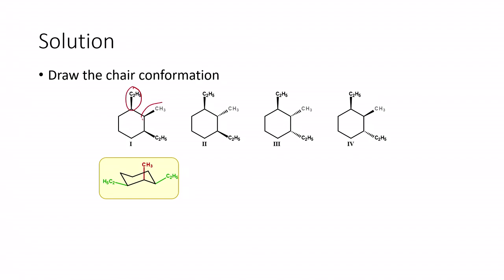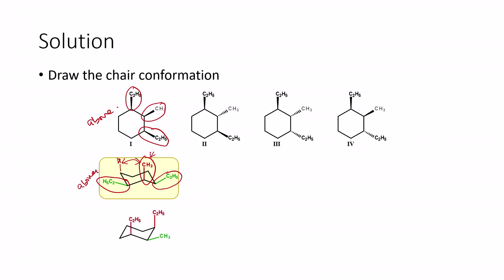Compound one has an ethyl, a methyl, and another ethyl group, all pointing above the plane. The methyl group (shown in red) is in the axial position, causing 1,3-diaxial interactions with neighboring hydrogen atoms — this gives some instability. The two ethyl groups are equatorial, so they do not have steric hindrance or 1,3-diaxial interactions, making this orientation somewhat stable.